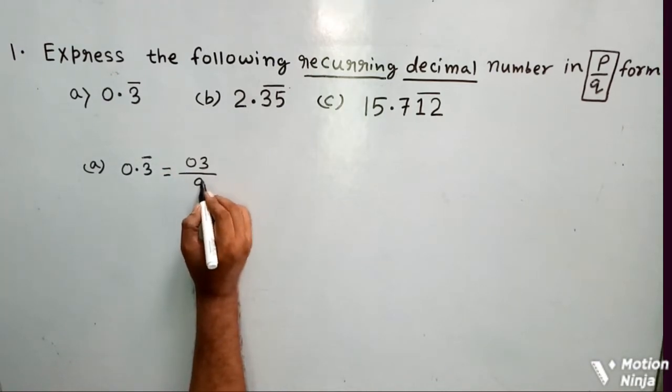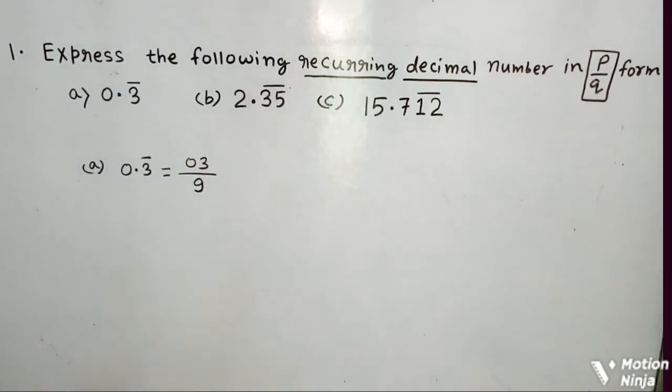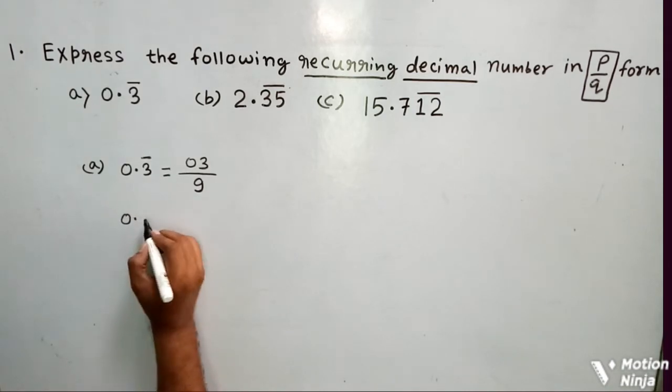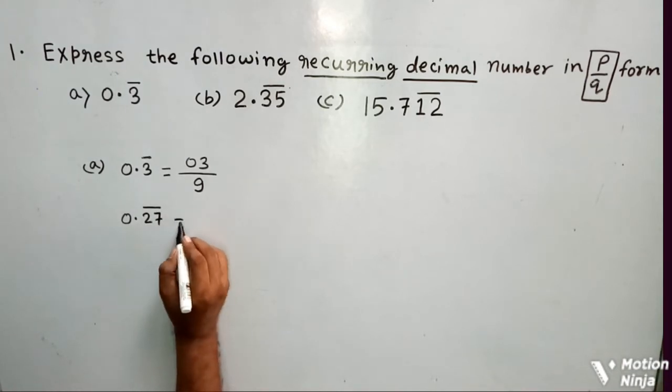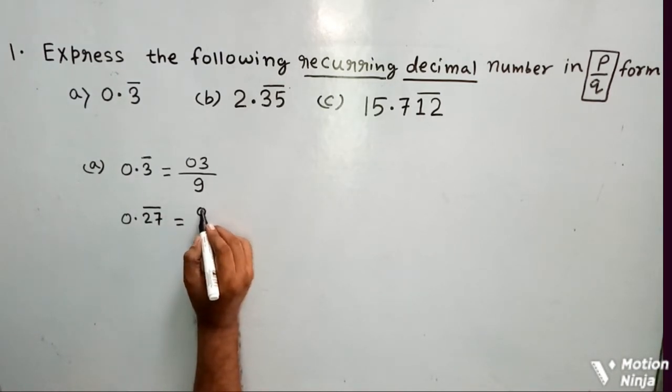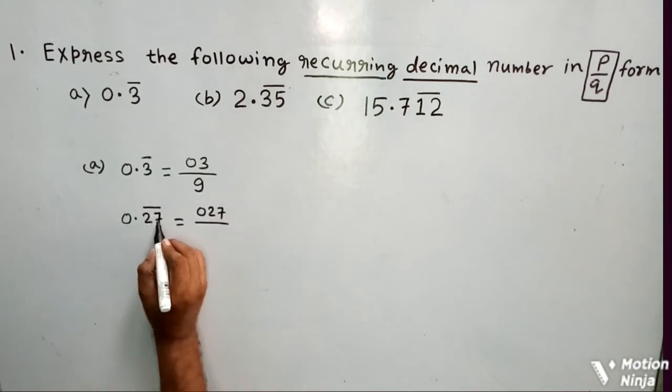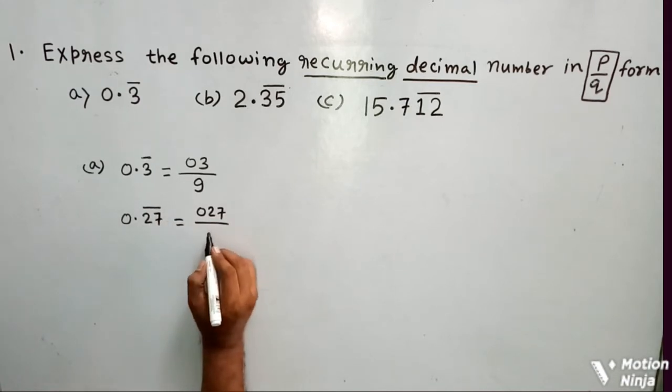For example, if it was 0.27 bar where 27 has a bar, I would have written 027 in the numerator. Now since two digits, that is 2 and 7, have the bar on their head, so in the denominator I will write 2 times 9.